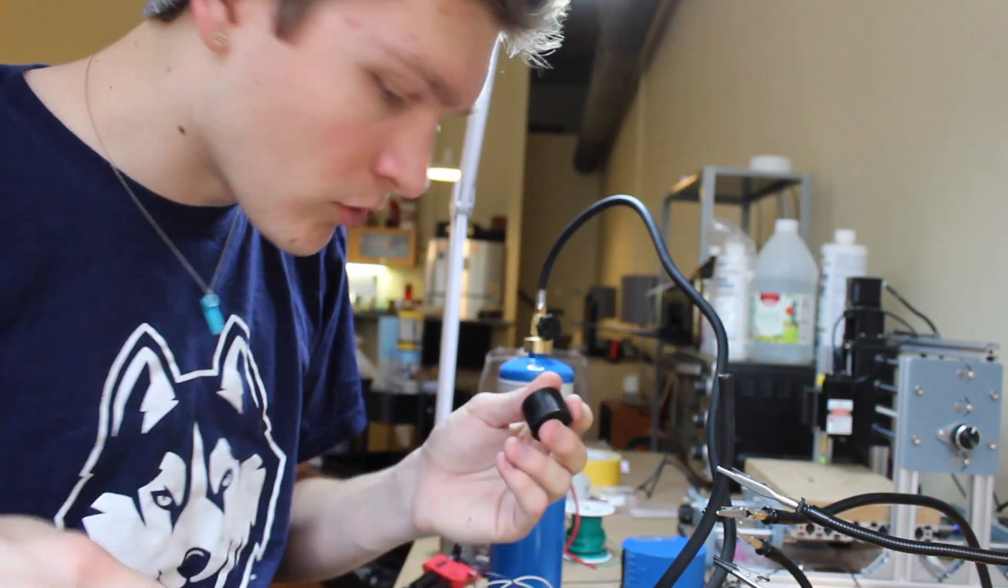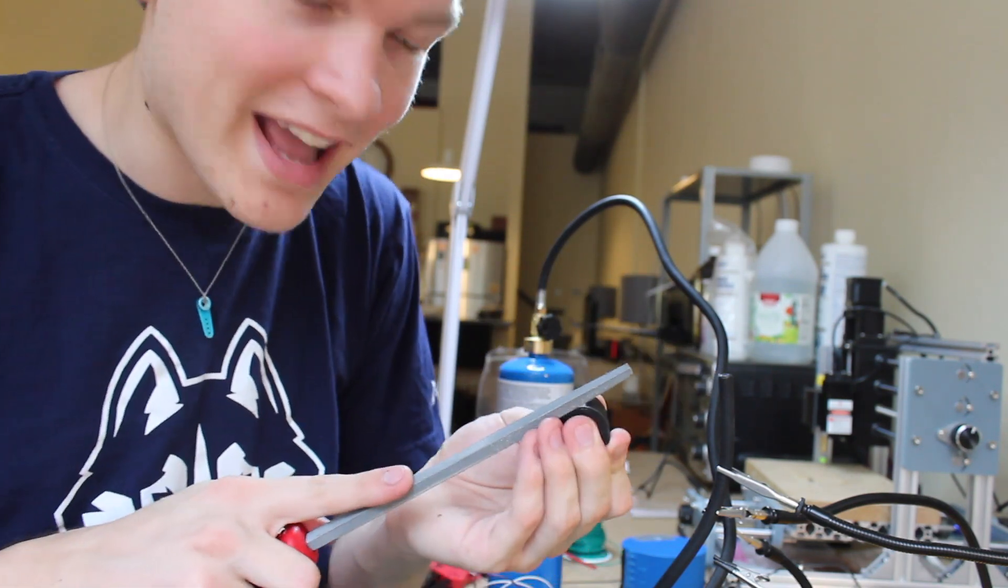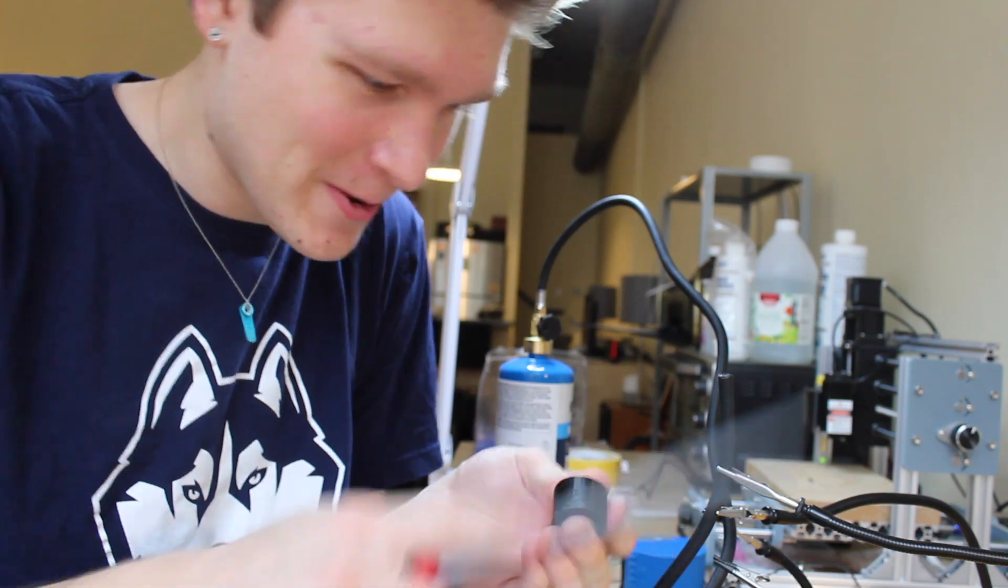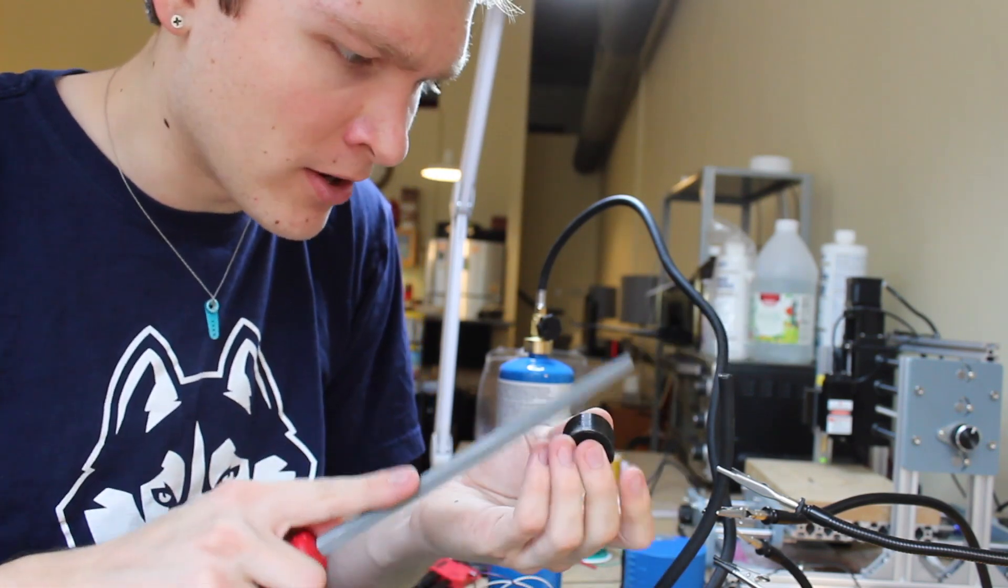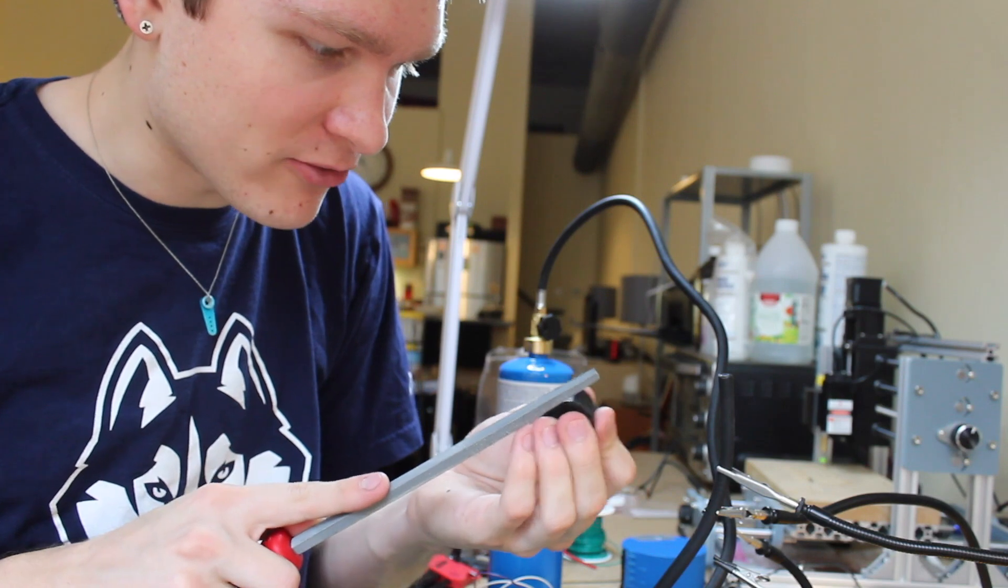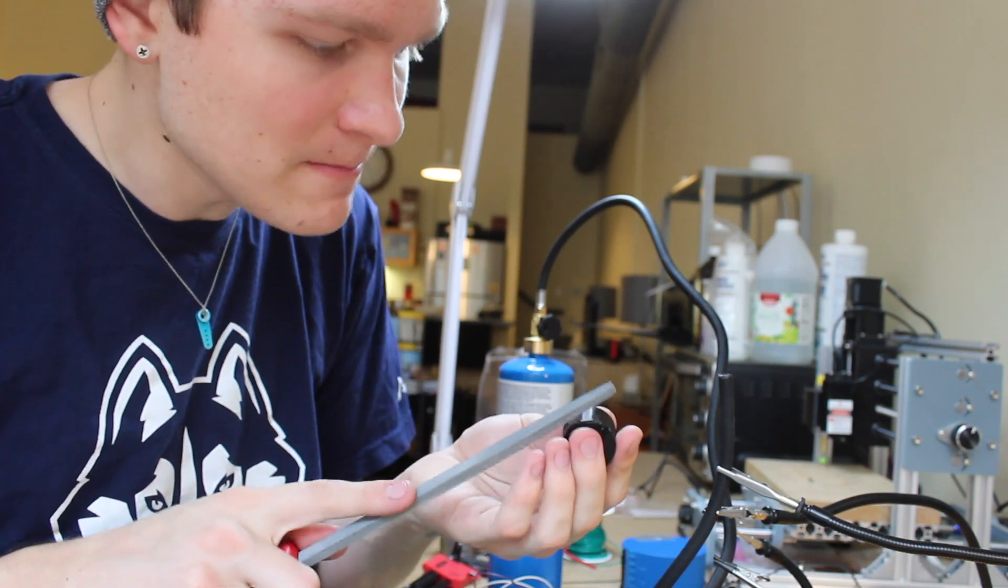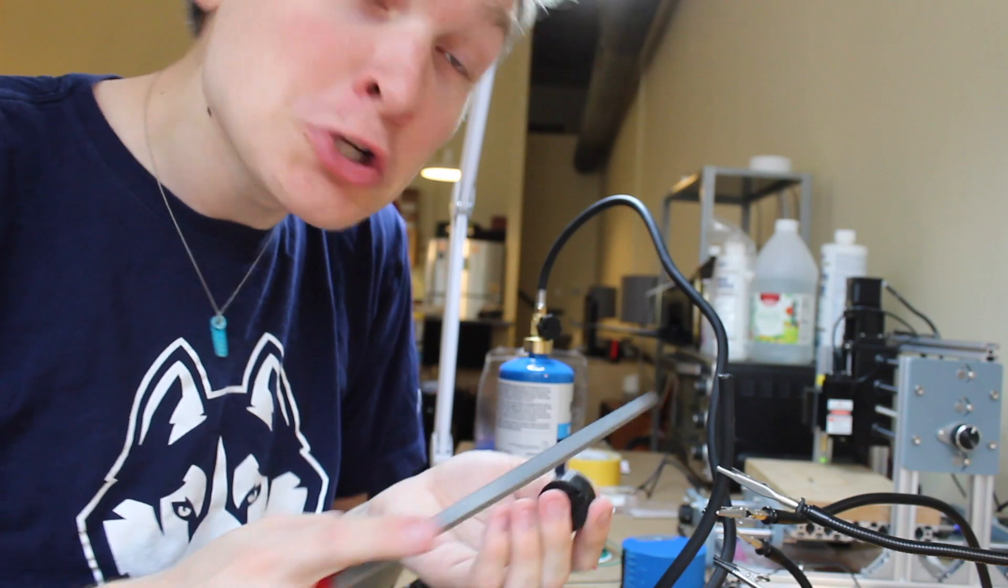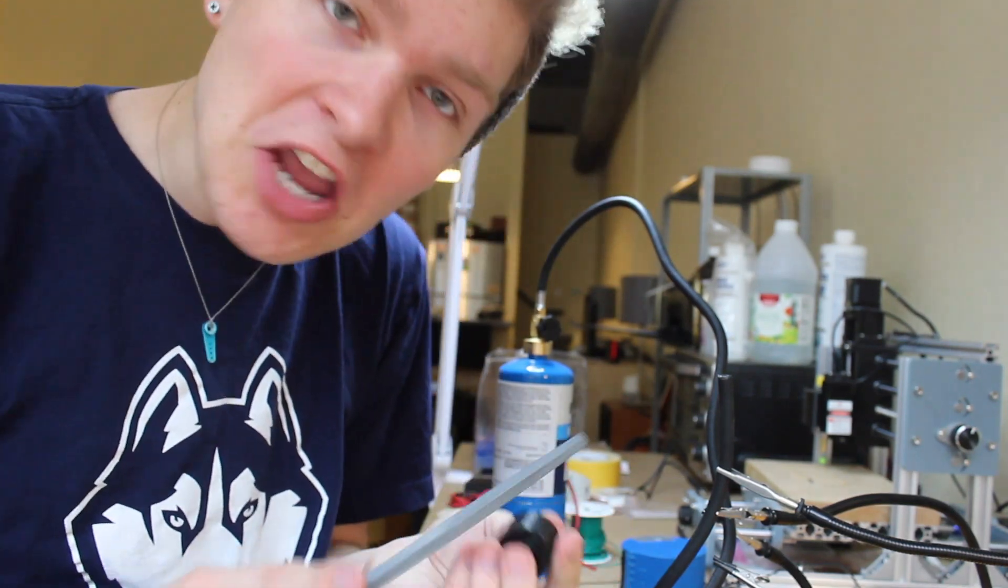Getting a little binding inside of this whole assembly here, so the servo can't actually close the gas all the way. So I'm just gonna sand this sucker down, make sure that it can spin freely inside of this assembly, so I can actually turn the gas off, which I think is kind of important.